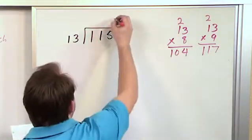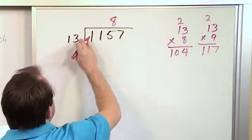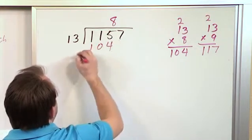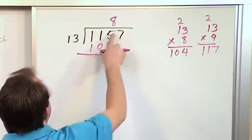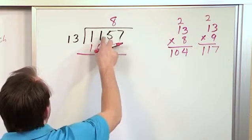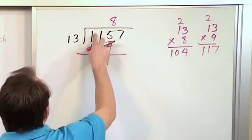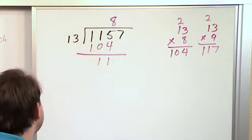We put the 8 on top of here. We know what the answer to this multiplication here is 104. And now we can subtract straight away. 5 minus 4 is 1. 1 minus 0 is also 1. 1 minus 1 is 0. We don't have to write that down.